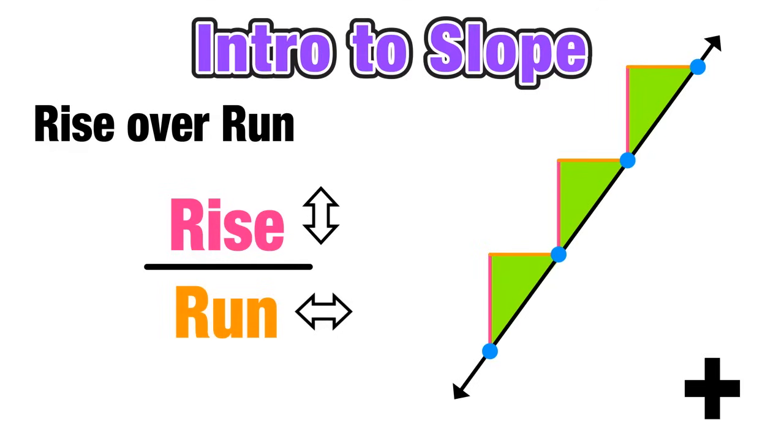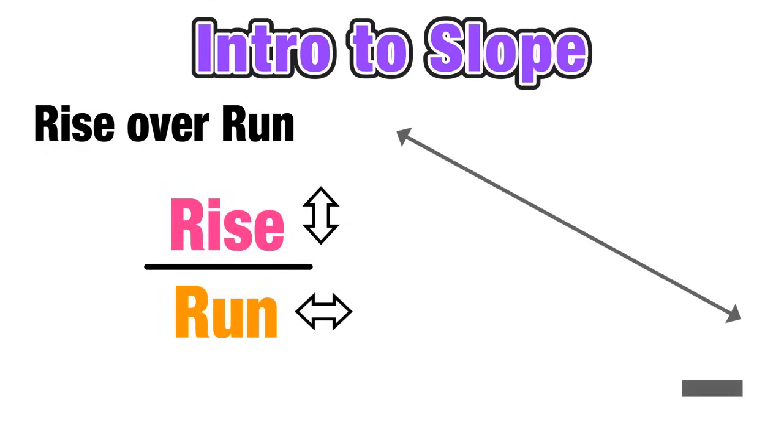However, if our line has a negative slope, that is it decreases from left to right, when we rise we rise downwards - I know that sounds weird, but we're rising in a downward direction - and then running over to the right to move from point to point.